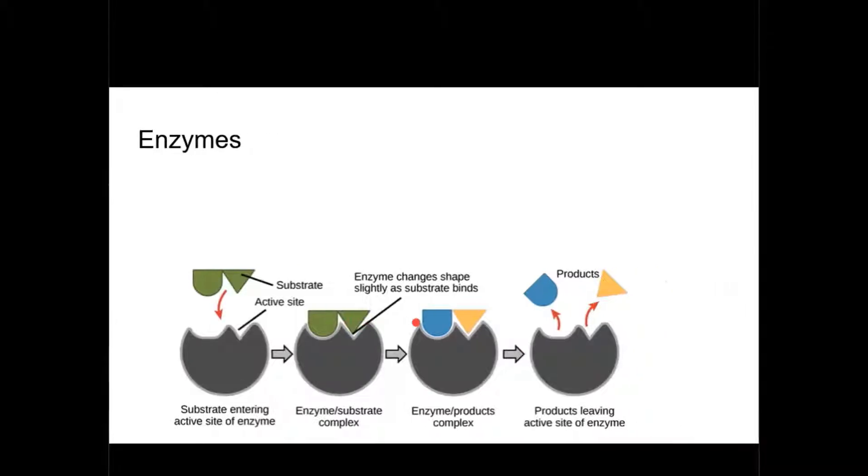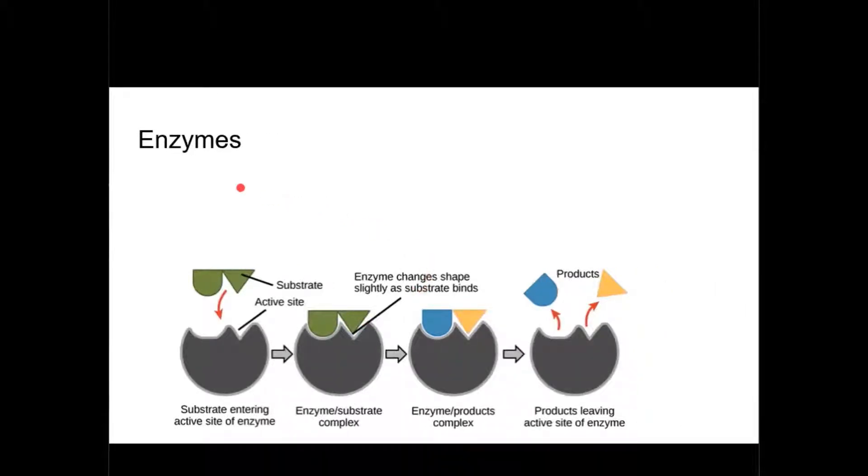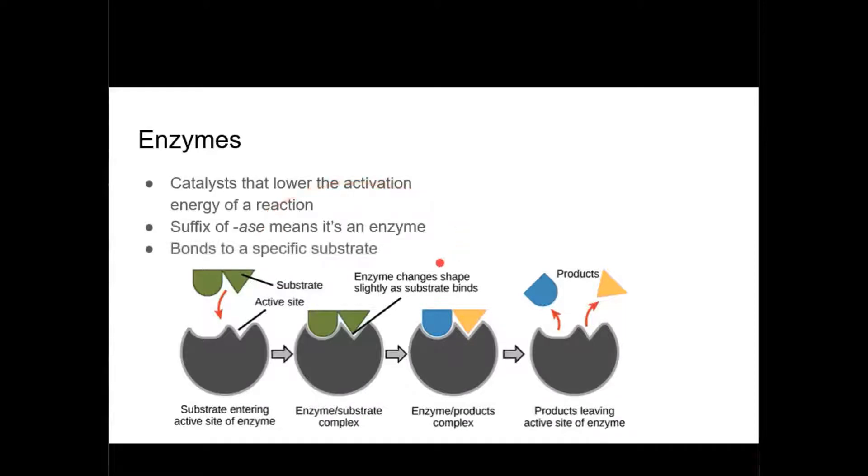First we're going to go over some of the chemistry that happens within the body. Enzymes are special proteins called catalysts that lower the activation energy for a chemical reaction to occur. These are important because it allows the body to do various types of chemical reactions without burning up a lot of energy. For every one enzyme, you have one substrate, kind of like a lock and its key.